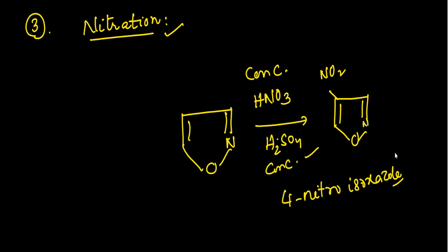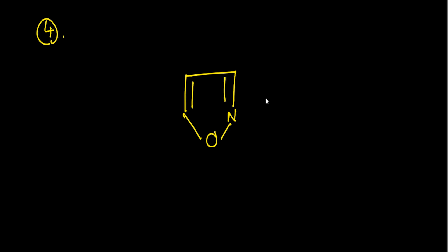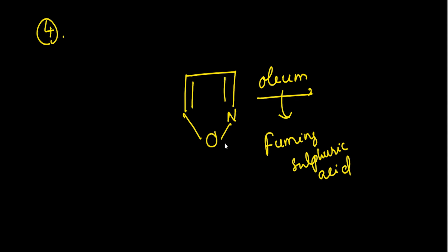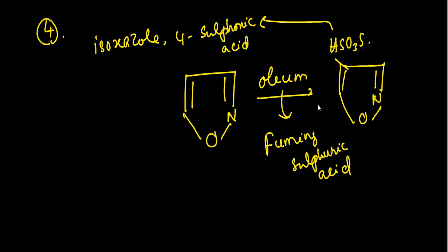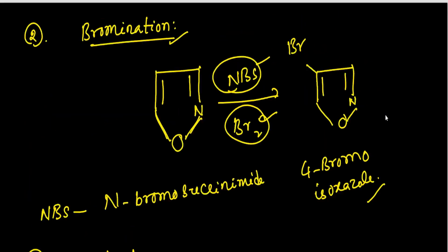The fourth reaction is the reaction of isoxazole with oleum, also called fuming sulfuric acid. This reaction gives isoxazole-4-sulfonic acid — meaning the sulfonic acid group (–SO₃H) is also introduced at the fourth position, giving isoxazole-4-sulfonic acid.